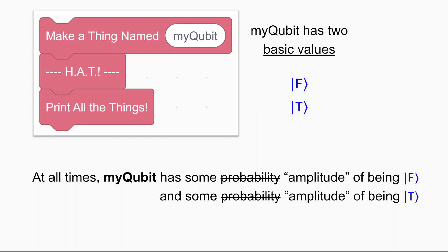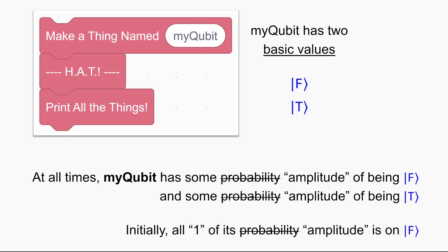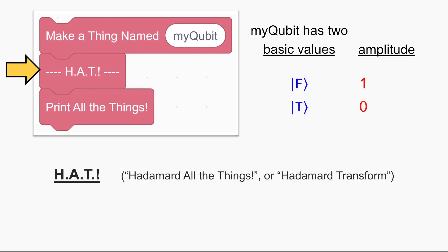The default is that when you first make or initialize a qubit, all one of its amplitude is on false. So when we first execute this line of code, we get into a state where the amplitude of my qubit being false is one and the amplitude of it being true is zero. If hypothetically we just printed my qubit now, we would always see false. But we don't do that — the next thing we do is this magical quantum instruction that I call hat.